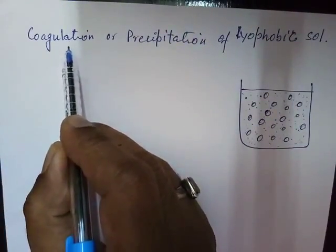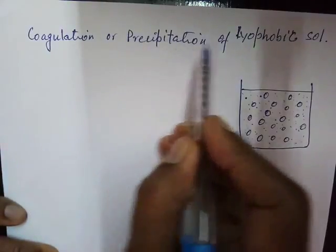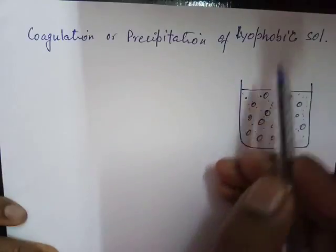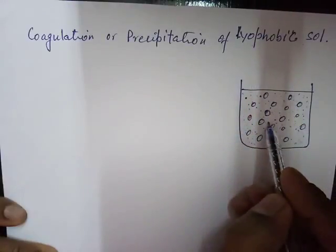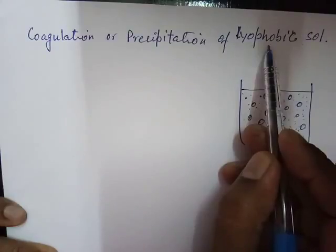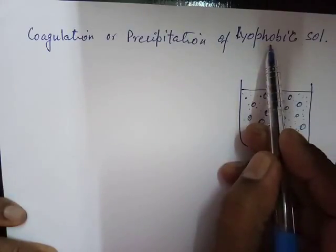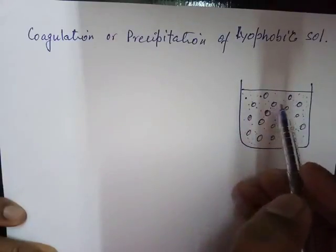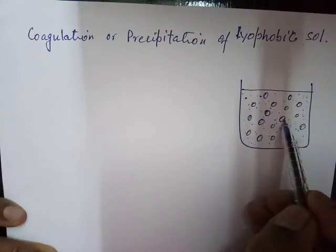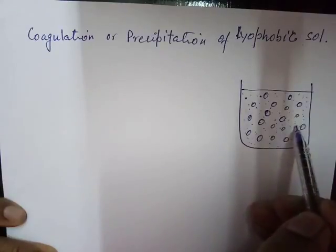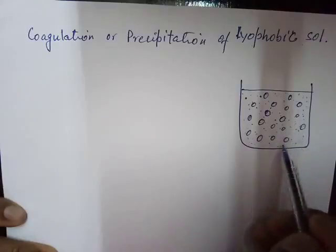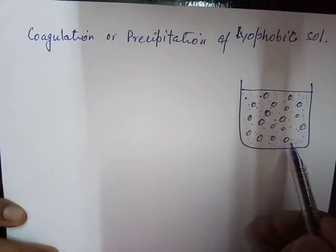In this video we are going to study the coagulation or precipitation of lyophobic sols. We already know that lyophobic sols are unstable — they are solvent-repelling colloidal particles, therefore highly unstable. They always carry some charge adsorbed at their surface, either negative or positive, and they repel each other. That is why they are stable and remain in colloidal solution; otherwise, if there is no charge, they will settle down.